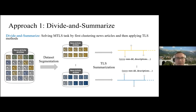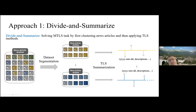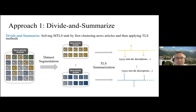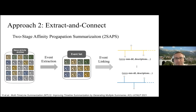In the divide-and-summarize approach, we take a heterogeneous collection of news articles on different topics and divide it — for example, by clustering — into more coherent, homogeneous subsets. Then for each sub-collection we apply traditional TLS methods, which result in one timeline per separate collection. This is a two-step approach that still utilizes traditional TLS methods.